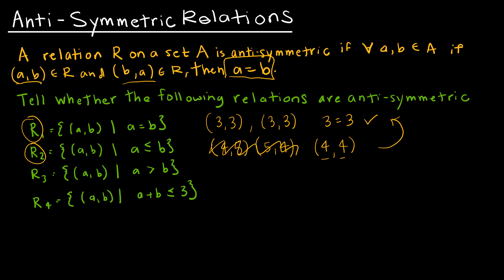For R3, where A is greater than B: is there any point where both (A, B) and (B, A) are in the relation? If we have (5, 2) in the relation, is (2, 5) in it? It's not. Recalling logic: if the first part of an if-then statement is false, the conclusion is vacuously true. So R3 is antisymmetric because there are no values where both (A, B) and (B, A) are in the relation.